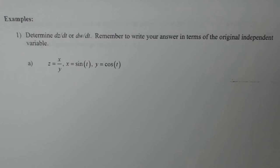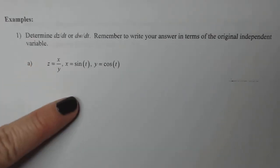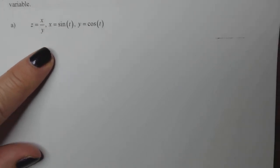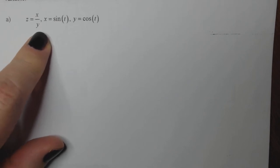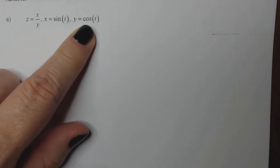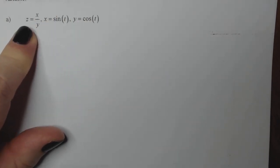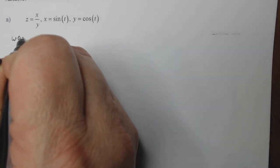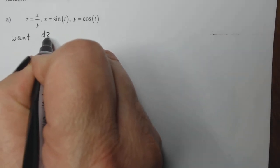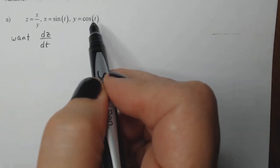We're going to do several examples of how to use the chain rule. In these examples, we're going to find dz/dt or dw/dt. Here, z is a function of x and y, x is a function of t, and y is a function of t. So if I did all the substitution, z would be a function of one variable. So what I really want to find is dz/dt — not partials — because x and y are functions of single variables.